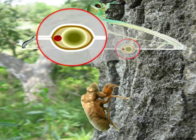Next, we will examine the structures of the thorax segments that are involved in flight and their relationships with the flight muscles.